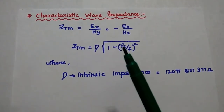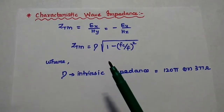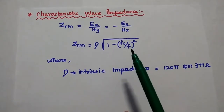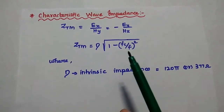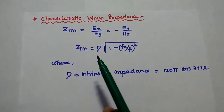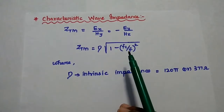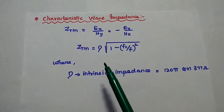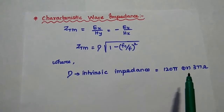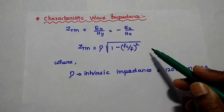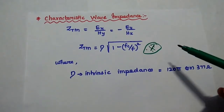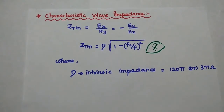The last characteristic is wave impedance for TM waves. Z_TM is equal to the ratio of electric field to magnetic field: Ex to Hy, or equivalently minus Ey by Hx. Its value is Z_TM equal to eta times square root of (1 minus (Fc/f) whole squared), where eta is the intrinsic impedance of the waveguide with value 120π or 377 ohms. This is a very important formula for calculating the wave impedance of TM waves.